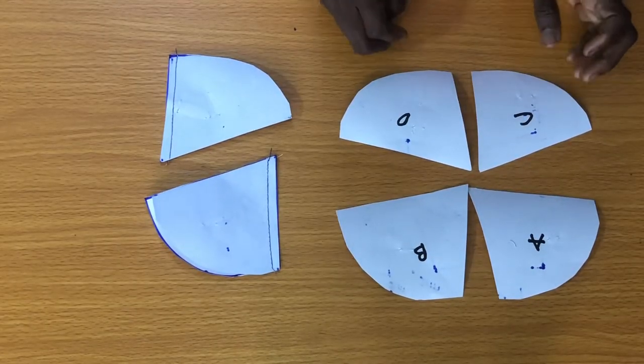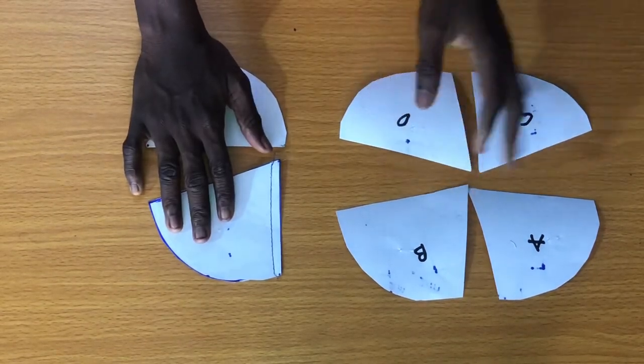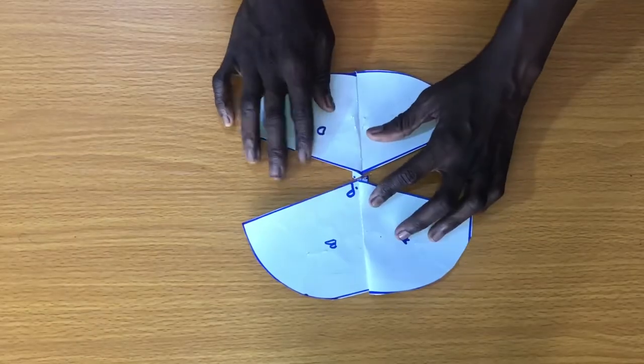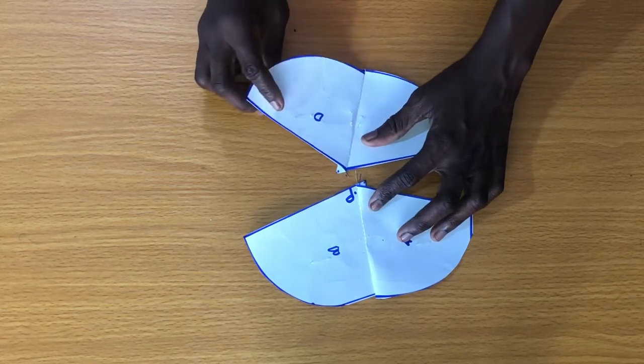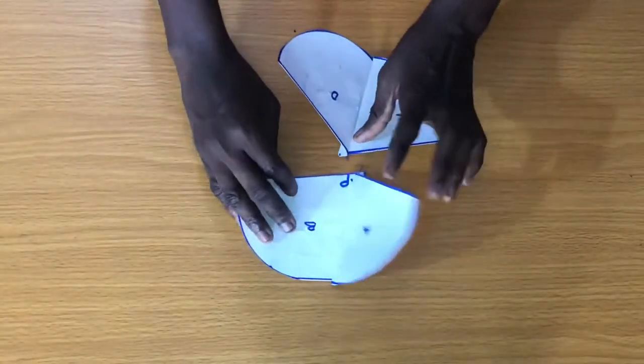So make sure you also take the pieces of the other bra cup, then you attach them together the same way. So I will be working with just one bra cup because I don't want to take much of your time. So whatever I do on this first bra cup is what you also do on the second bra cup.